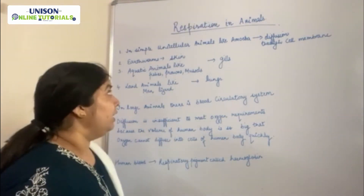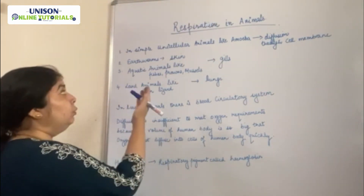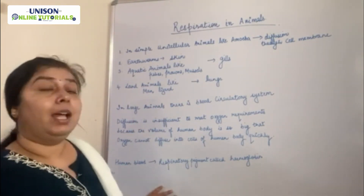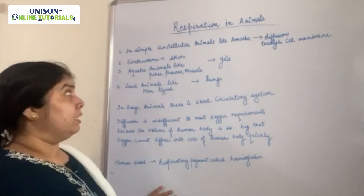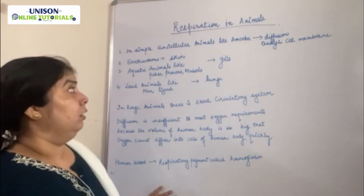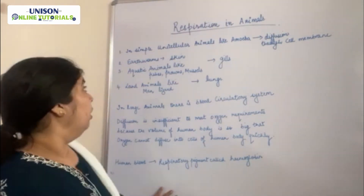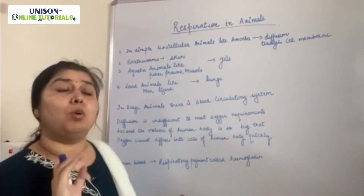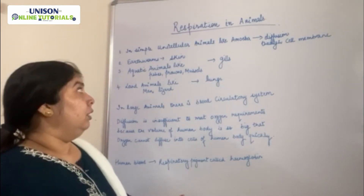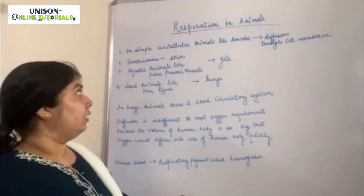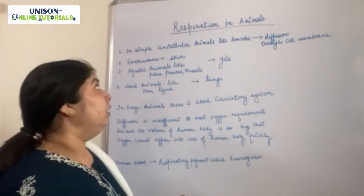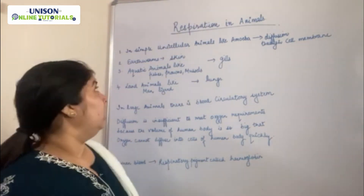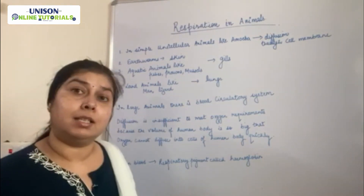In case of multicellular organisms like earthworms, or aquatic animals like fishes, prawns and mussels, or land animals, we require a specific organ for respiration. In earthworms, they have moist skin with small pores. The exchange of respiratory gases — oxygen and carbon dioxide — takes place with the help of the skin. So the respiratory organ in earthworms is the skin.